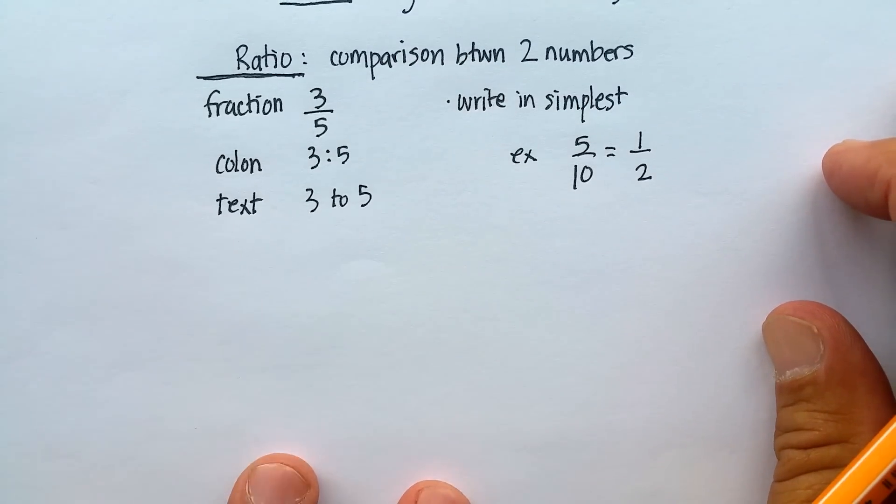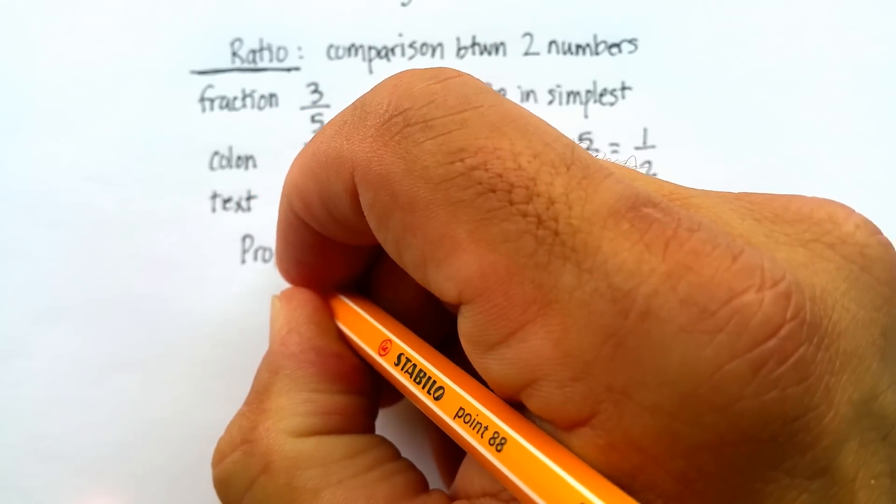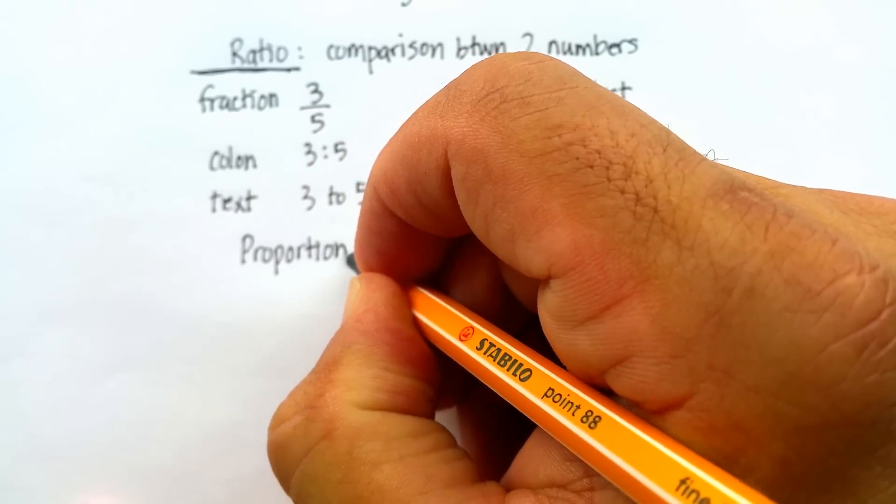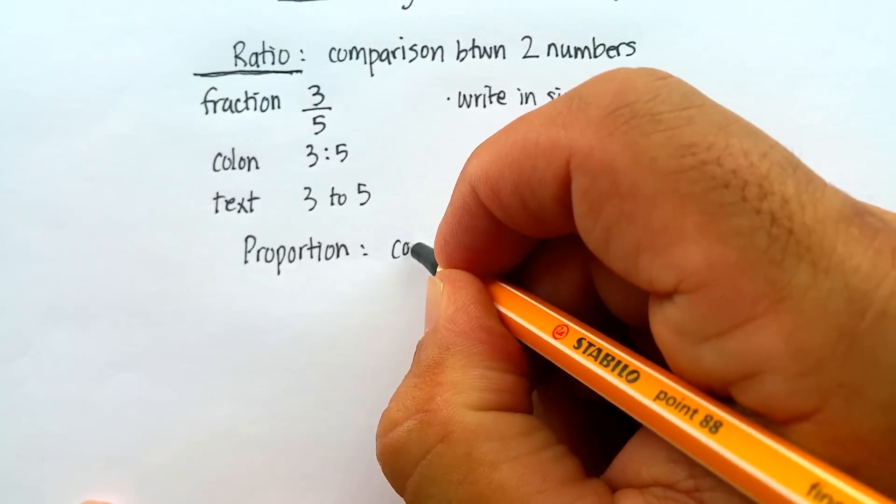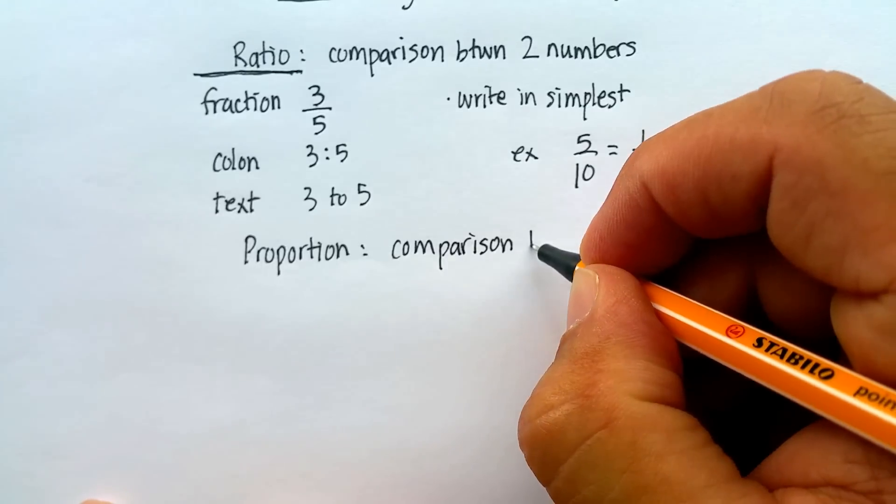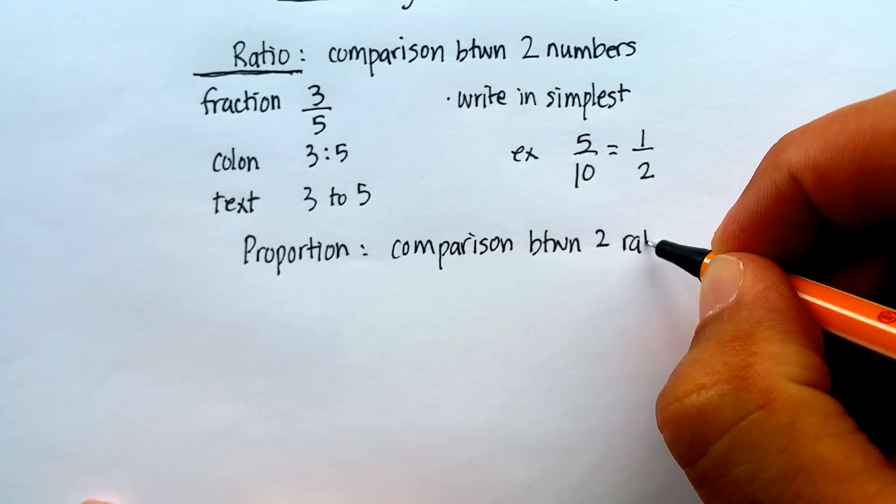So ratios are just a comparison between two numbers. Now, how is that different from a proportion? So a proportion is the comparison of two ratios.